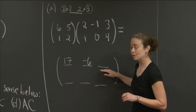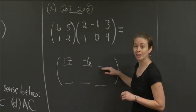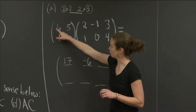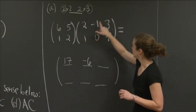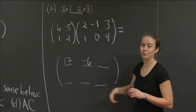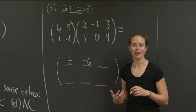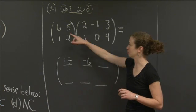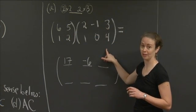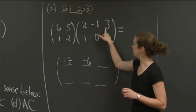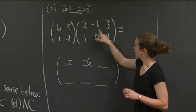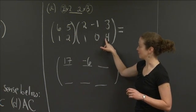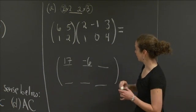And then here I am now in the third spot of the first row. So I'm in row 1, column 3. So that's, again, row 1 of the first, column 3 of the second. So you see a pattern here about where we're getting our things from that we're multiplying. It's row 1, column 3 of the resulting. I take row 1 of the first, column 3 of the second. So 6 times 3 is 18, plus 5 times 4 is 20, so 20 plus 18 is 38.